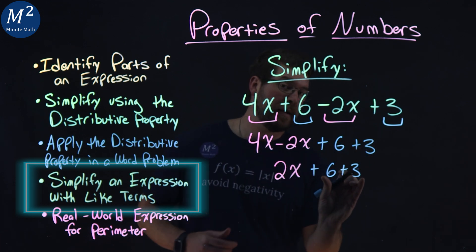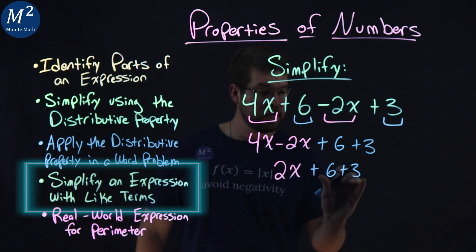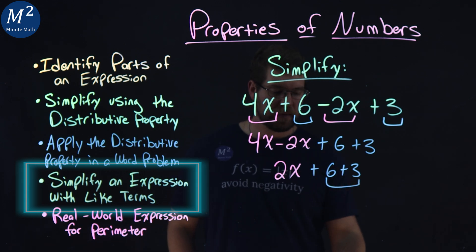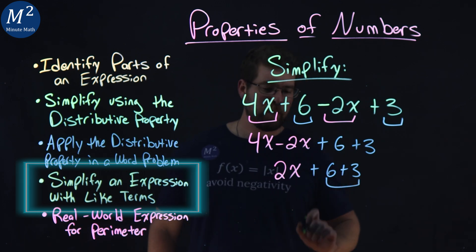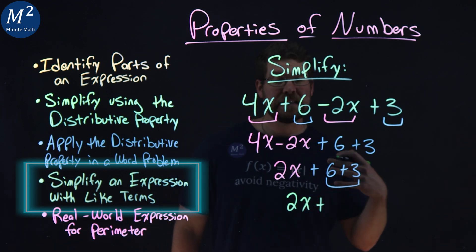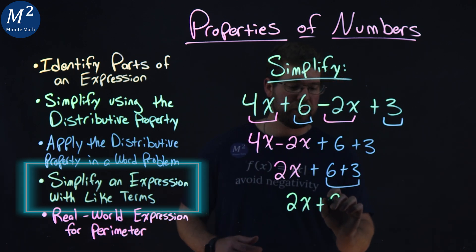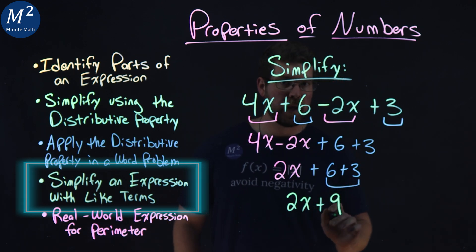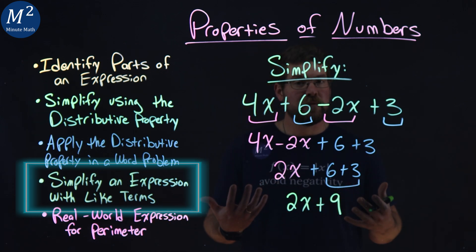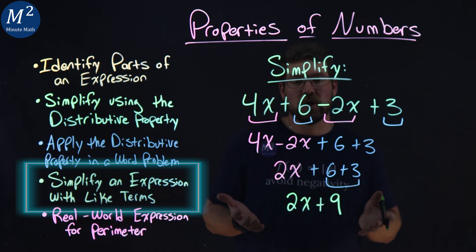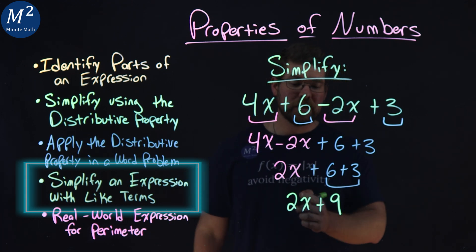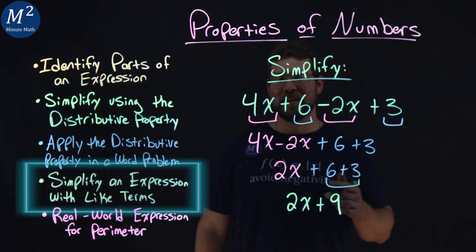Now I want to combine the like terms — the constants — the 6 and the 3. So I'm going to bring down the 2x, then plus, and 6 plus 3 is 9. And now we have our answer. There's nothing else we can simplify and combine because they're not like terms anymore. So we simplified our expression and got 2x plus 9.